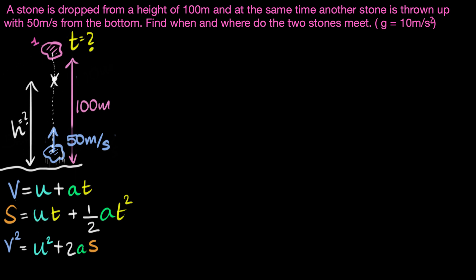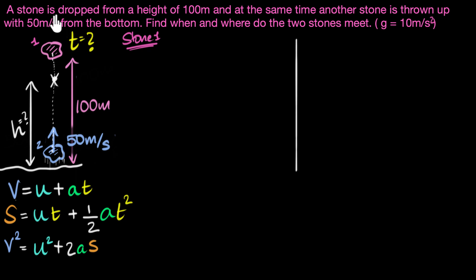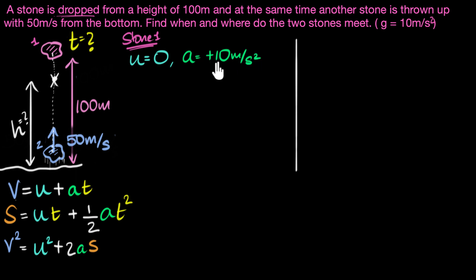Let's call the dropped stone as stone number one and the thrown stone as stone number two. For stone one: it's being dropped, so its initial velocity U is zero. Its acceleration is plus 10 meters per second squared, because as it falls down its velocity increases, so acceleration is positive.